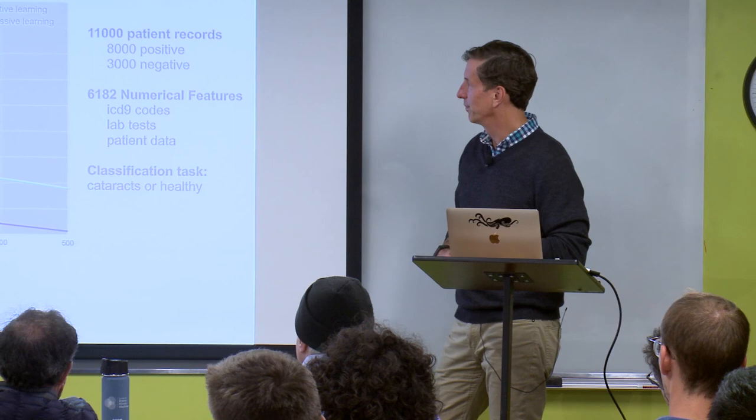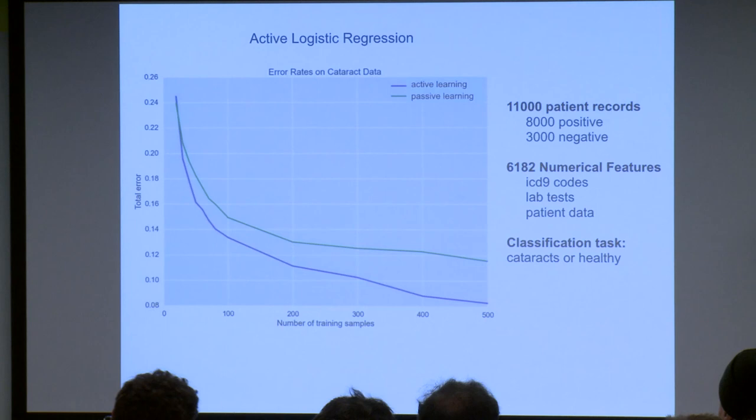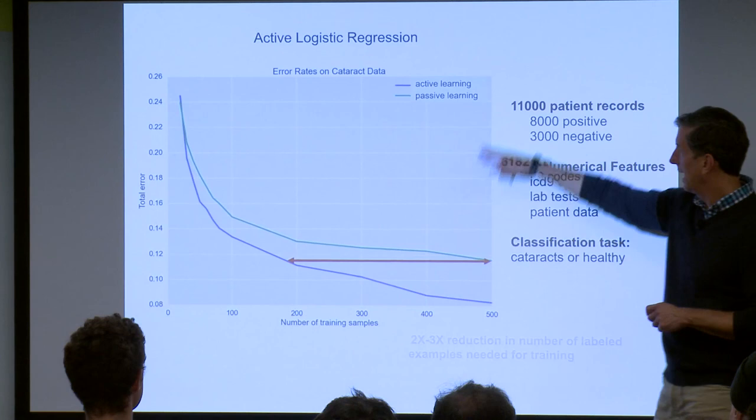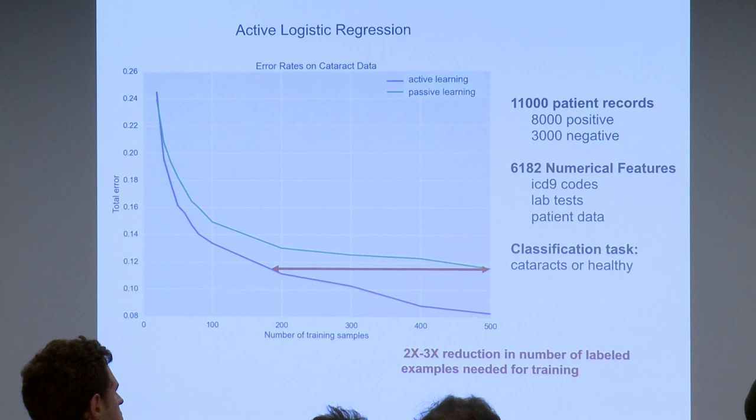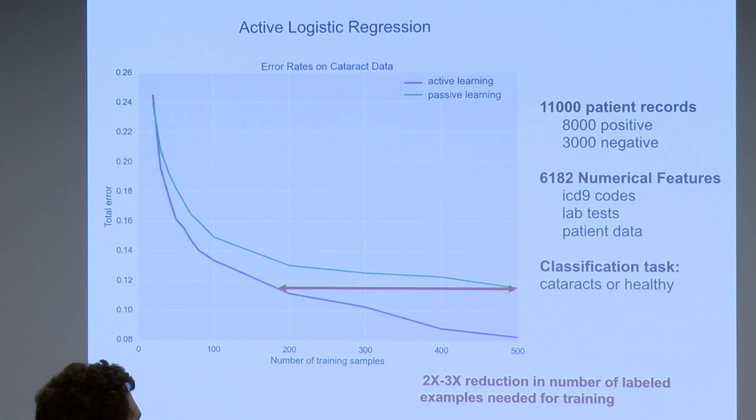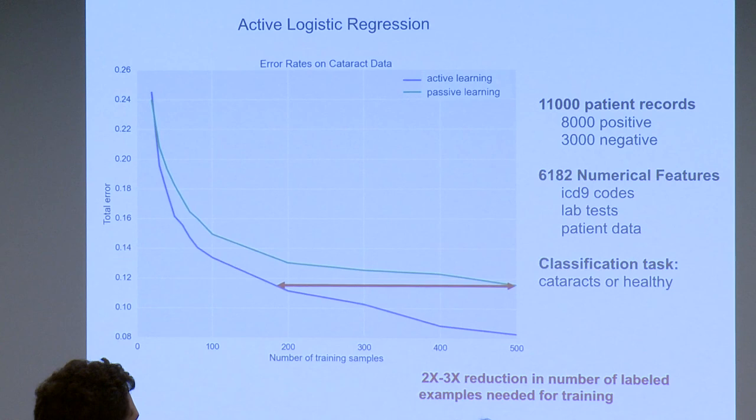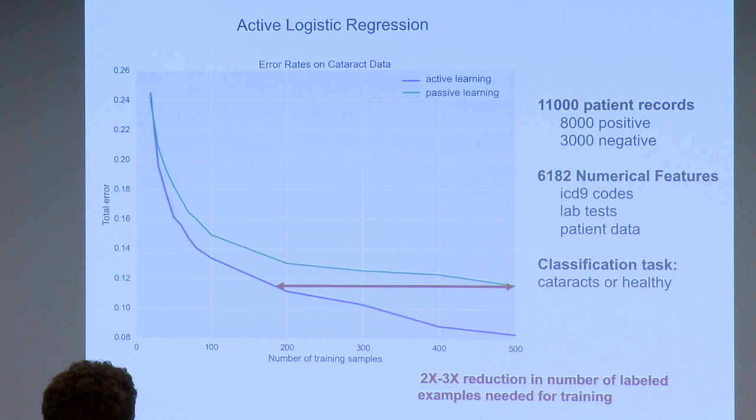In this experiment with 10,000 records and about 6,000 features, active learning vs. passive learning showed about a 2 to 3x improvement in the number of examples needed to achieve a particular error rate. If the labeling process is time-intensive and expertise-intensive, this acceleration can be really beneficial. This is introductory material to give a sense of how people start thinking about this problem.